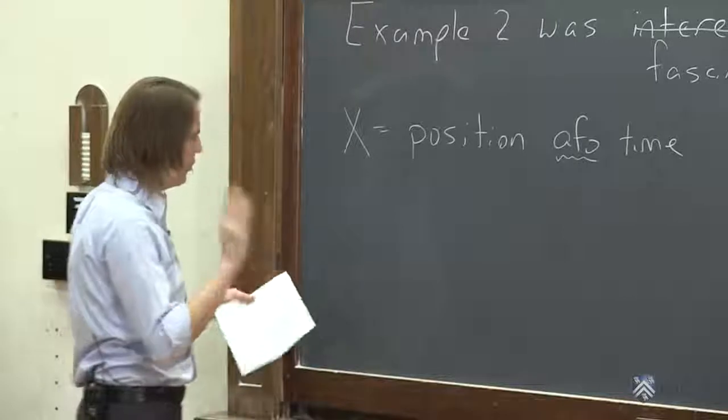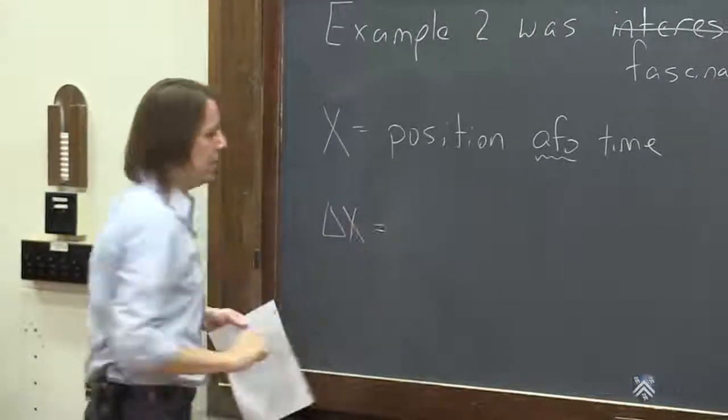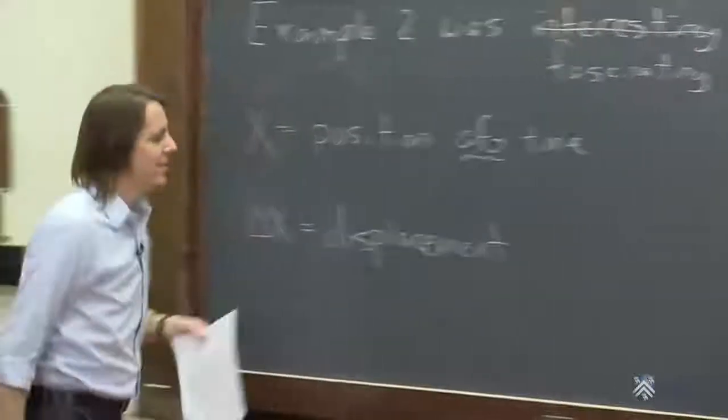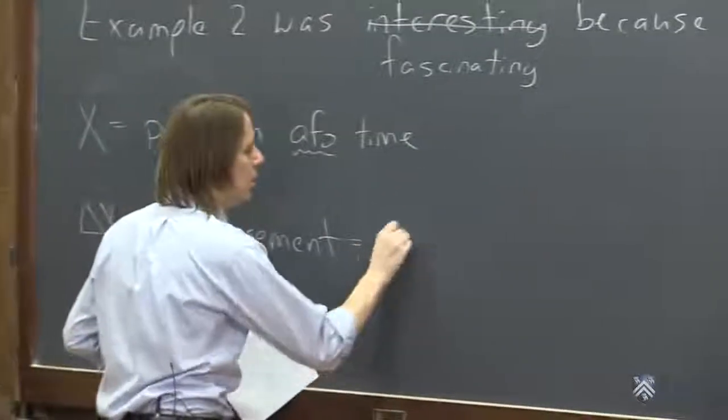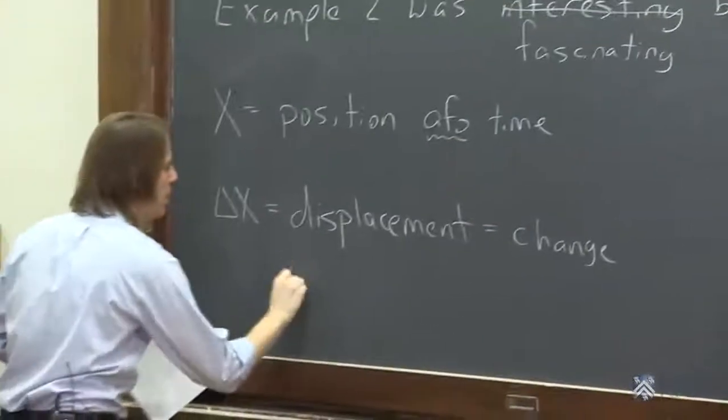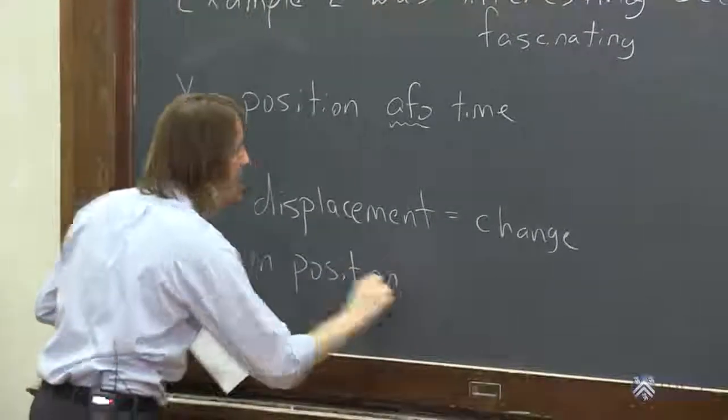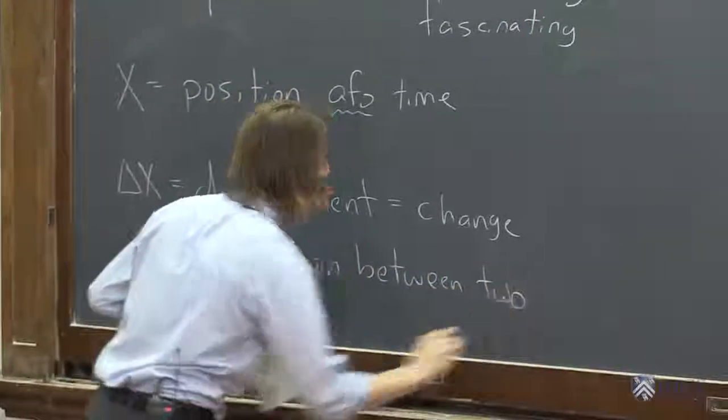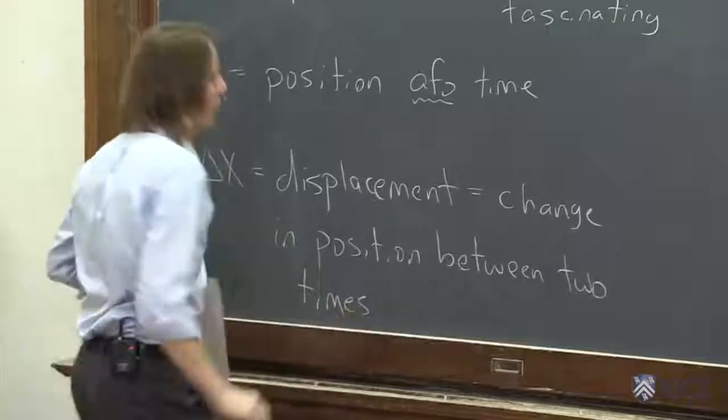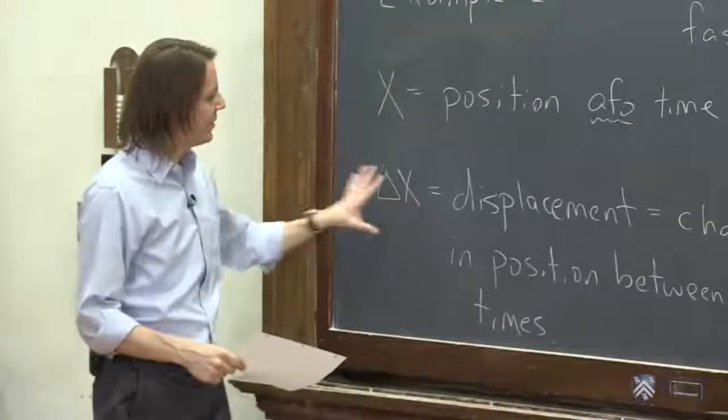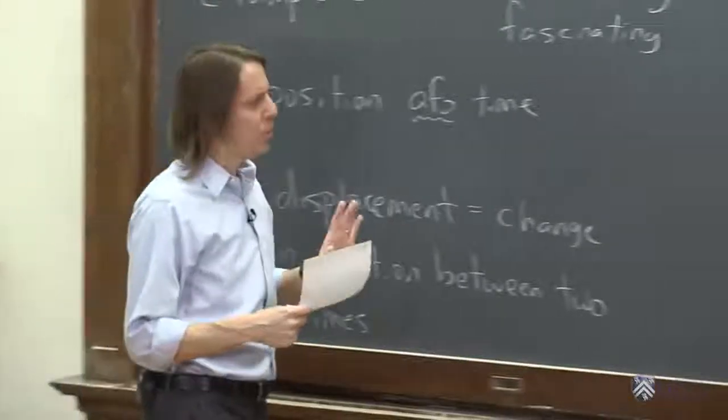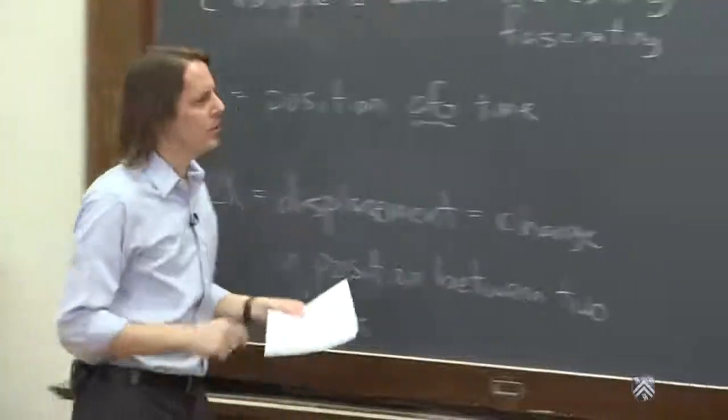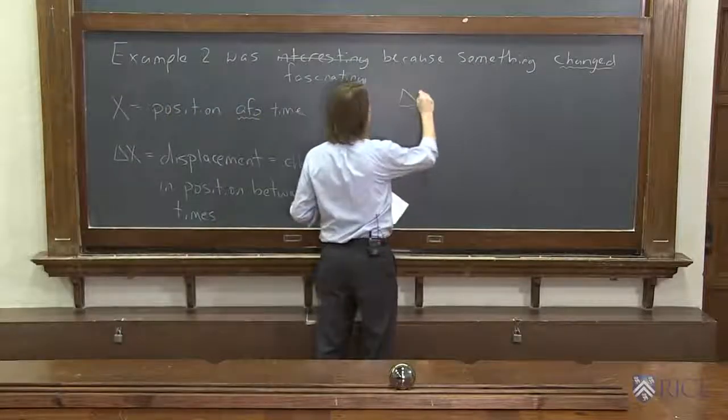But now we need a new one. So the new one, we write delta x. We call this the displacement. The displacement equals the change in position, and here's the key difference, between two times. So a little bit of a difference. This one continuously changes in time, this is really two different times. So let's look at our equations. We're not going to quite get to the equation that describes the motion yet, because we need to really obsess with displacement for a minute.